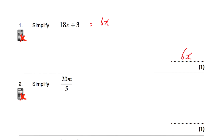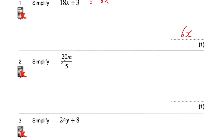Okay, question number 2. Sometimes instead of having the divide symbol, we've got a fraction line — it just means 20m divided by 5. So if we had 20m divided by 5, well 20 divided by 5 is 4, so we'd have 4m. The answer is just 4m.